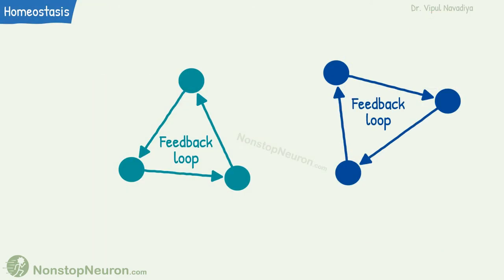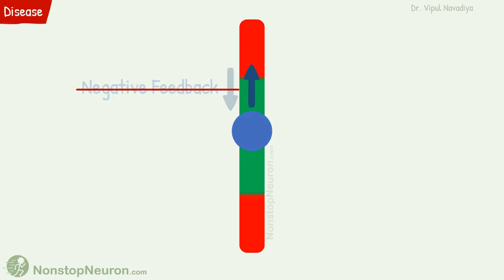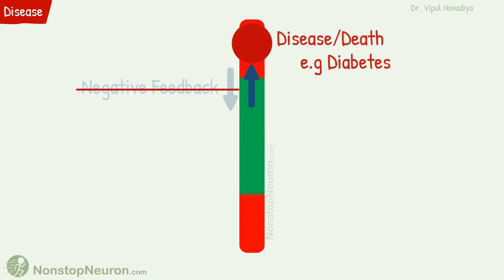We have seen examples of feedbacks in isolation and in a very simplified way. In the body, however, they are part of a large and complex network of controls. This control system contributes to homeostasis and good health. When homeostasis is disrupted, the result can be disease or death. For example, if insulin is not secreted in response to increased glucose, the body suffers various complications of diabetes.